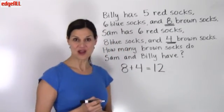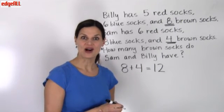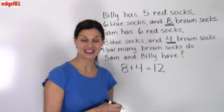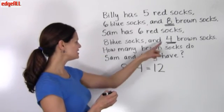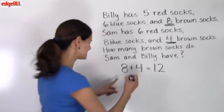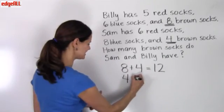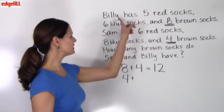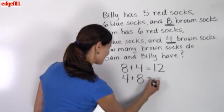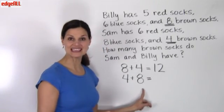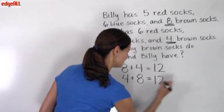And now that we know the commutative property of addition, we also know that we would get the same answer if we do Sam's socks, 4 brown socks first, plus Billy's 8 brown socks second. If we did 4 plus 8, we would also get the same answer of 12.